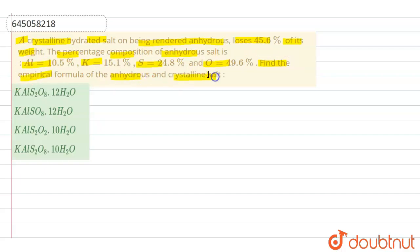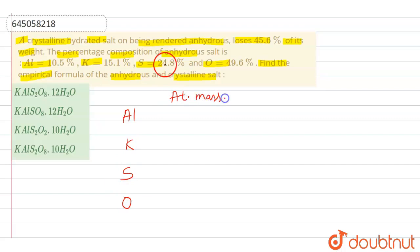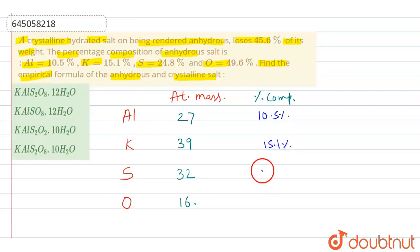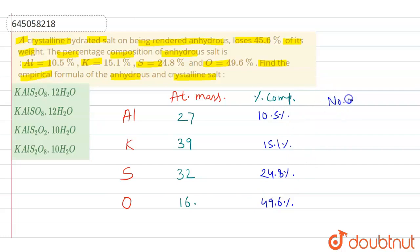We need to find the empirical formula of both the anhydrous and crystalline salt. We have the elements aluminium, potassium, sulfur, and oxygen. Their atomic masses are 27, 39, 32, and 16 respectively. The percent compositions as given are: aluminium 10.5%, potassium 15.1%, sulfur 24.8%, and oxygen 49.6%.